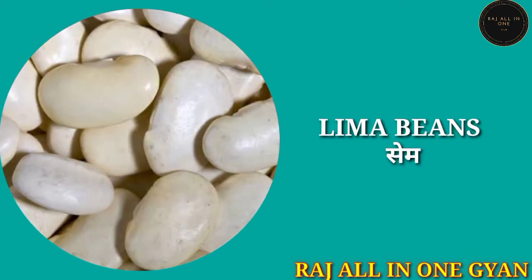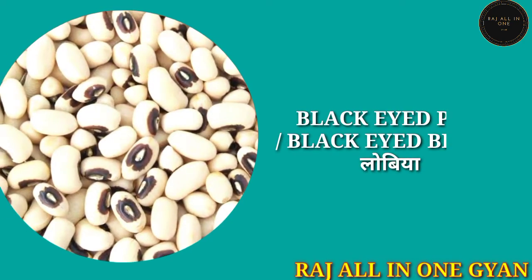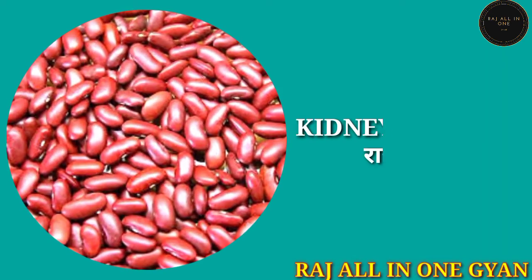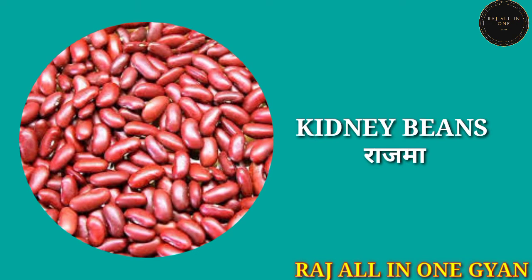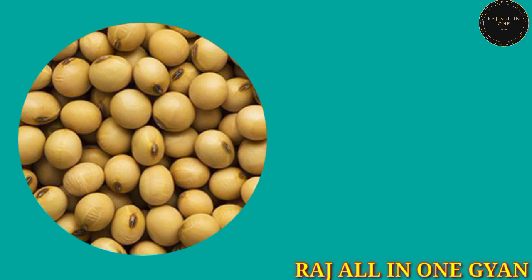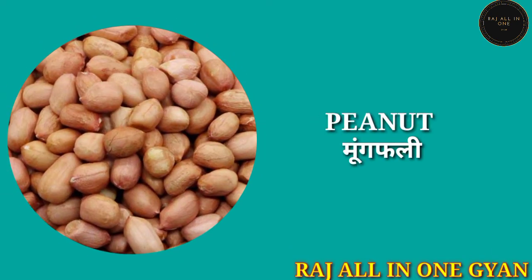Safed matar. Lima beans — Same. Black eyed peas, black eyed beans — Lobia. Kidney beans — Rajma. Soya bean. Peanut — Mungfali.